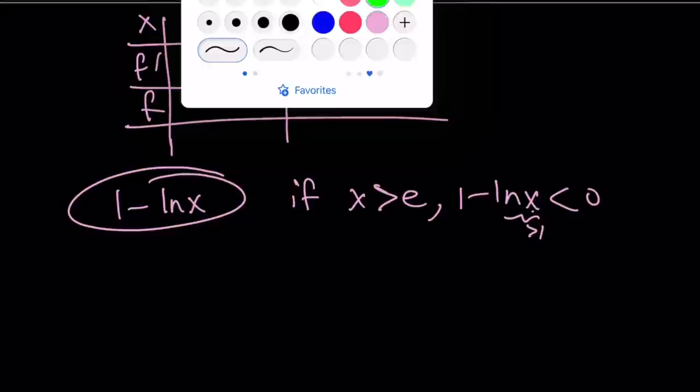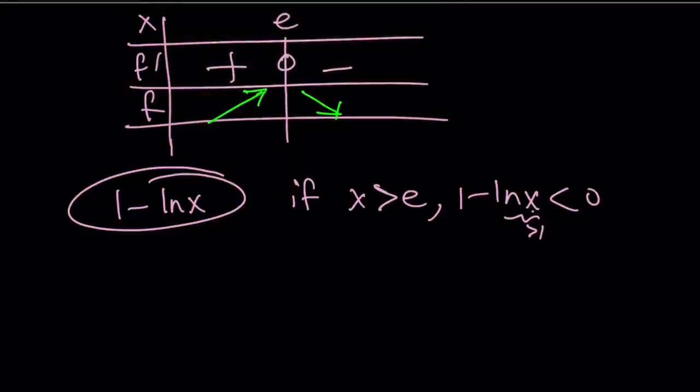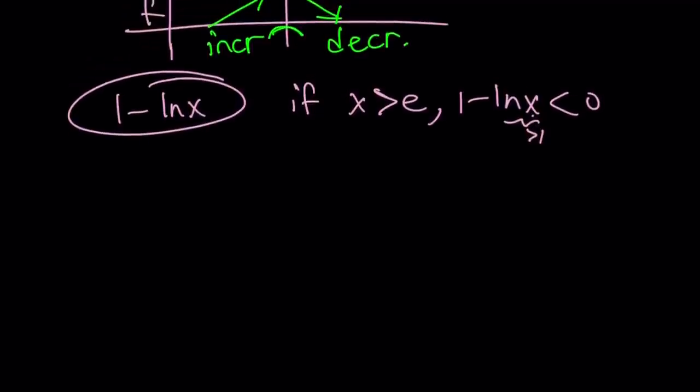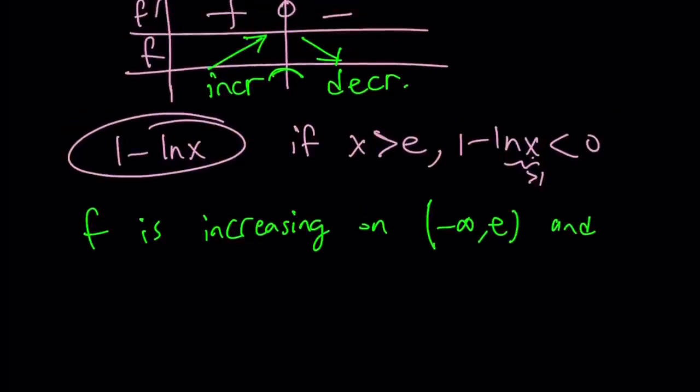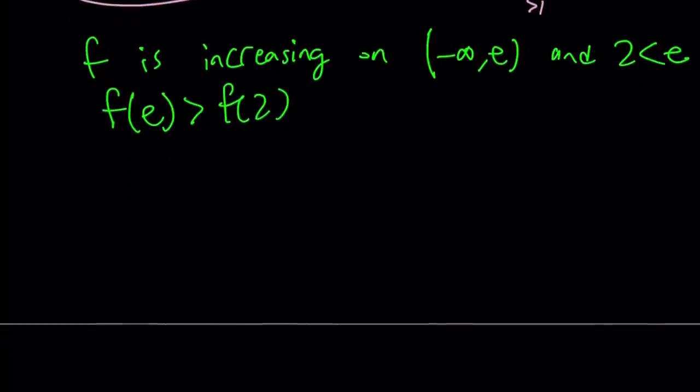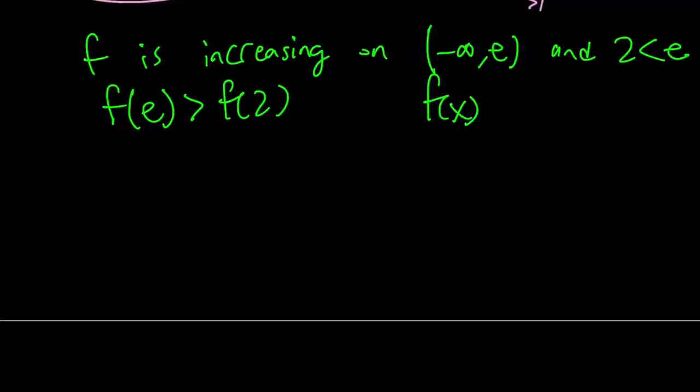This means that our function is going to be increasing and then decreasing, which makes a maximum at x equals e. So increasing first and then decreasing. Now let's write down what it means. F is increasing on negative infinity to e. Our function is increasing for x values that are less than e. And 2 is less than e, so that means f of e is going to be greater than f of 2. When I show you the graph, this is going to make much more sense. Since our function f of x is x to the power of 1 over x, f of e is going to be e to the power of 1 over e, and it's going to be greater than 2 to the power of 1 half, or square root of 2.